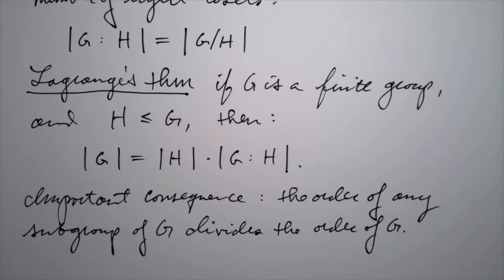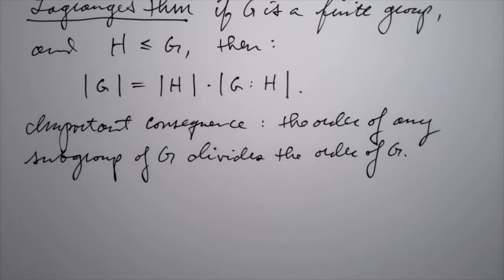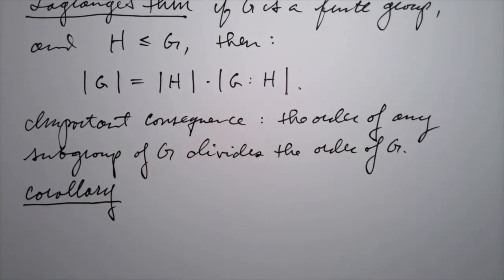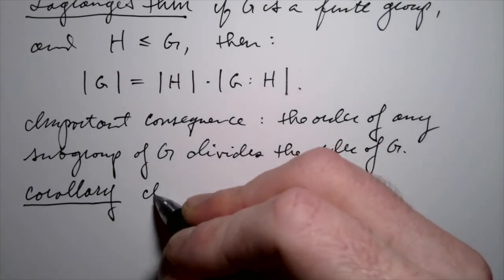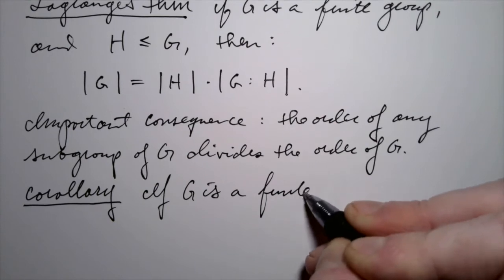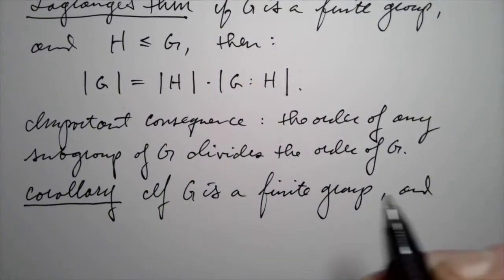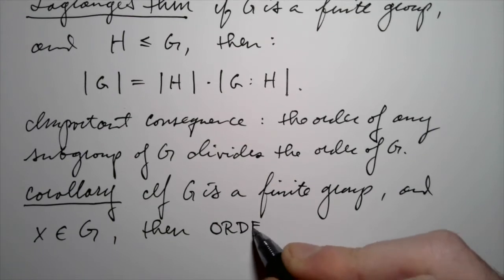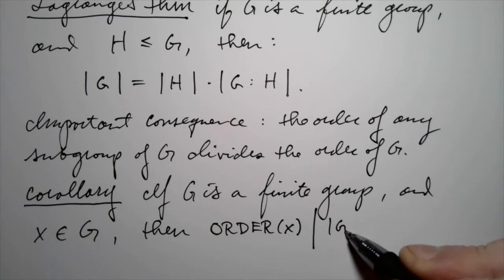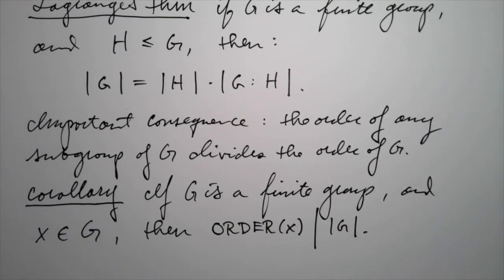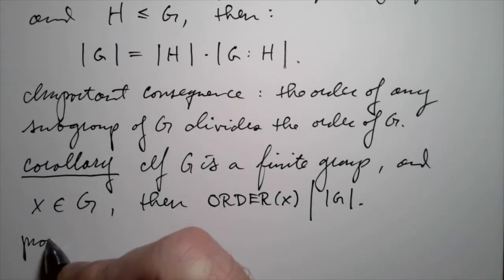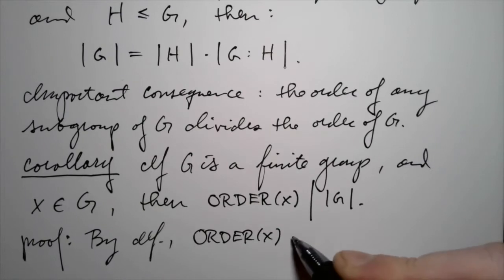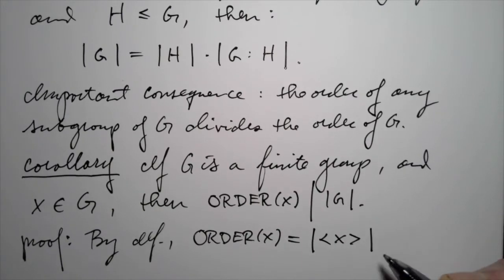Let's look at a more specific corollary — a special case of that consequence. Remember, a corollary is just a statement that follows immediately from a theorem. So this is a corollary of Lagrange's theorem: if G is a finite group and X is an element of G, then the order of that element divides the order of G. Why is this a corollary? Well, by definition, the order of X is the order of the cyclic subgroup it generates.